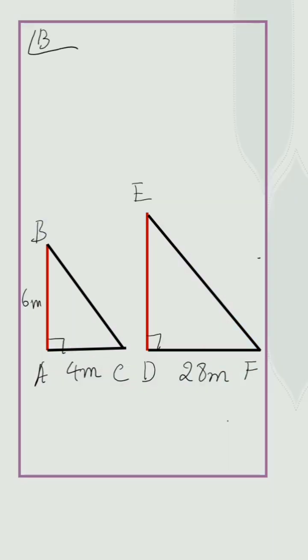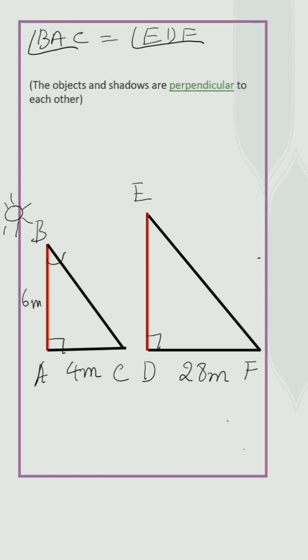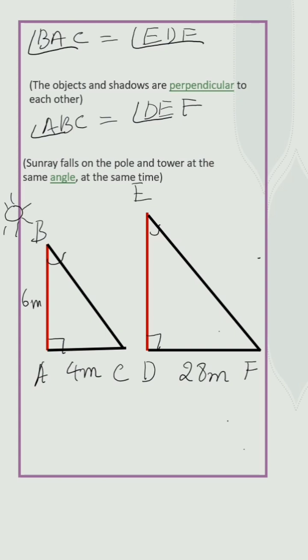So, angle BAC is equal to angle EDF because the object and shadows are perpendicular to each other. Angle ABC is equal to angle DEF because sunray falls on pole and tower at the same angle at the same time.